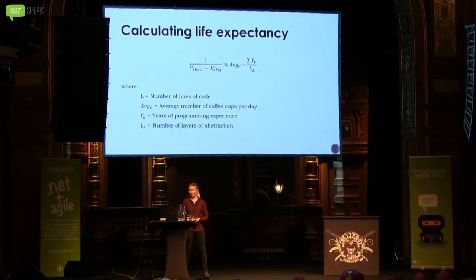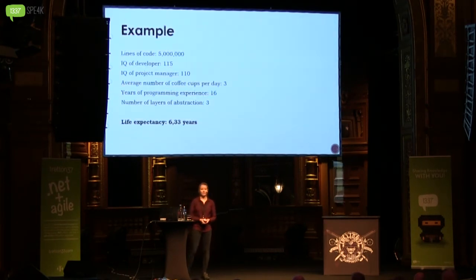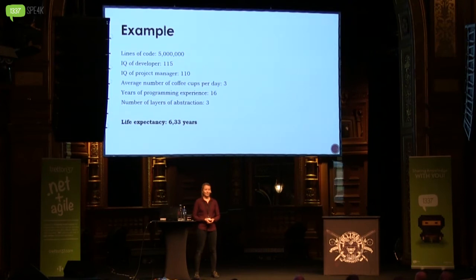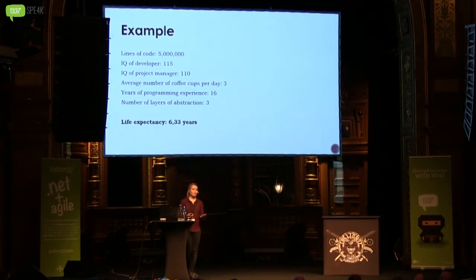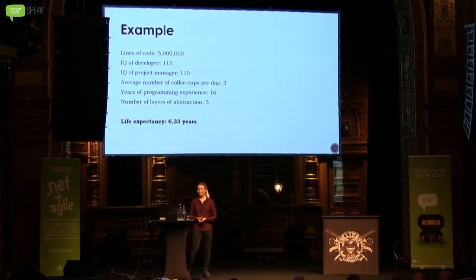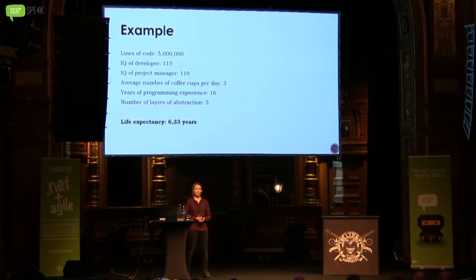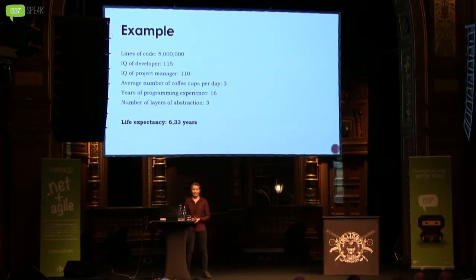Let's look at an example. In this code base we have five million lines of code. The IQ of the developer is about average — 115. The IQ of the project manager is, of course, a bit less: 110. Three coffee cups per day, and 16 years of programming experience with three layers of abstraction. That gives us a life expectancy of 6.33 years — that's six years and four months. That's not a lot.